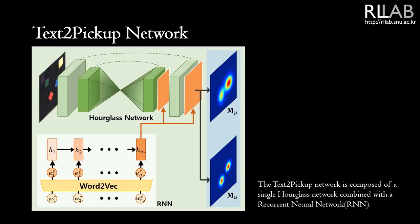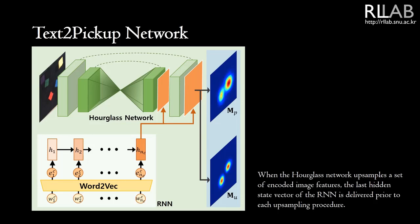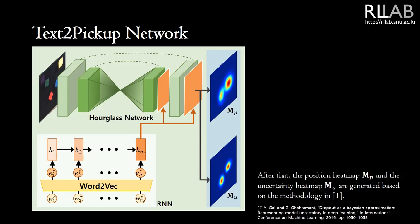The text-to-pickup network is composed of a single hourglass network combined with a recurrent neural network. When the hourglass network assembles a set of encoded image features, the last hidden state vector of the RNN is delivered prior to each downsampling procedure. After that, the position heatmap and the uncertainty heatmap are generated based on the methodology in paper number 1.